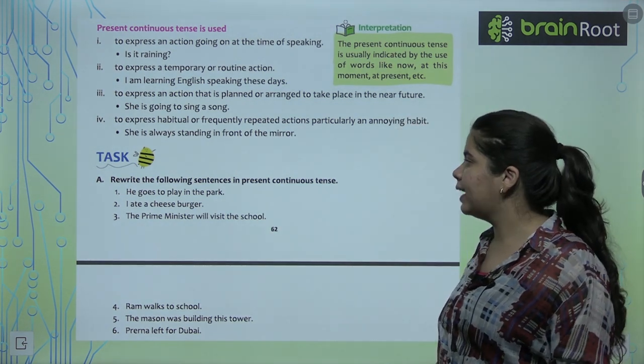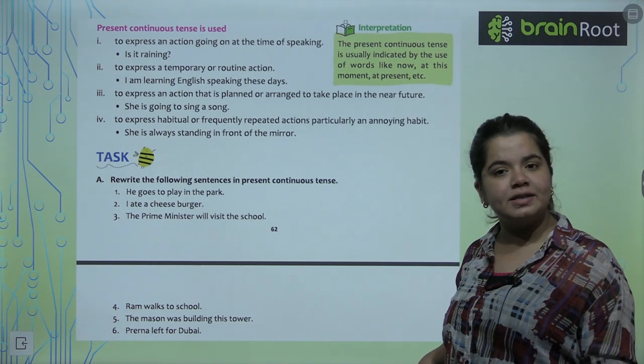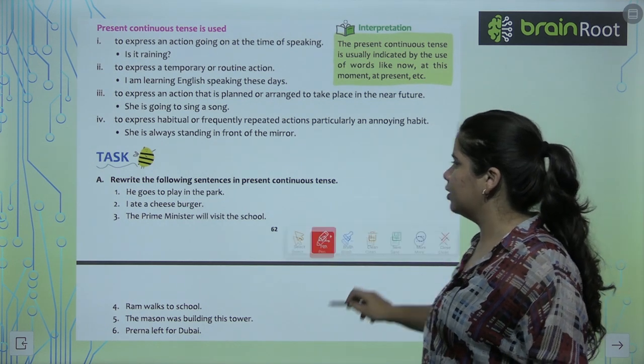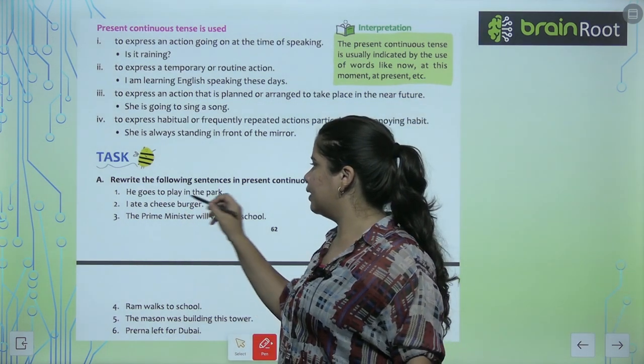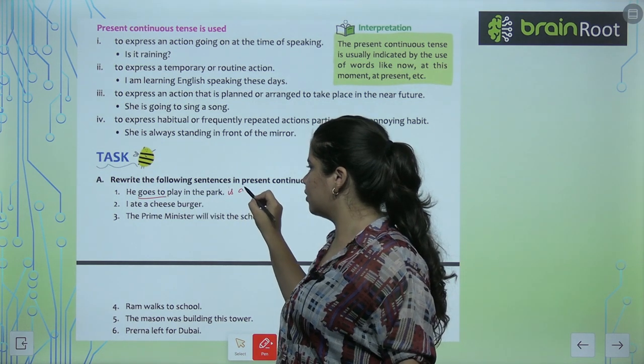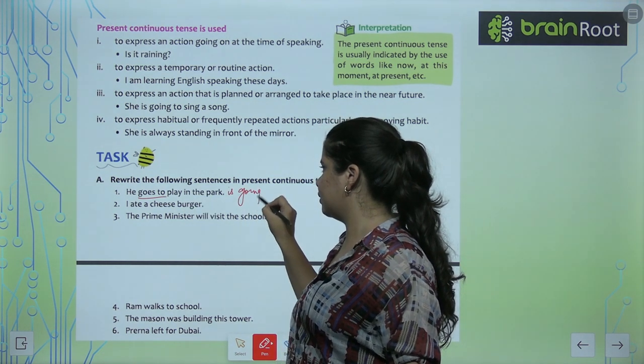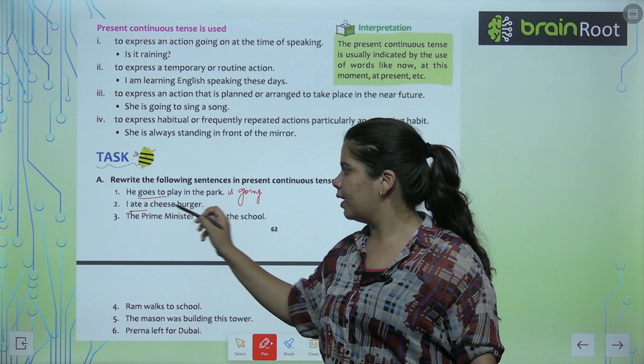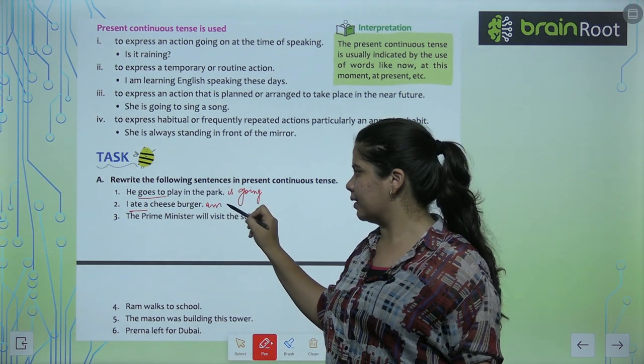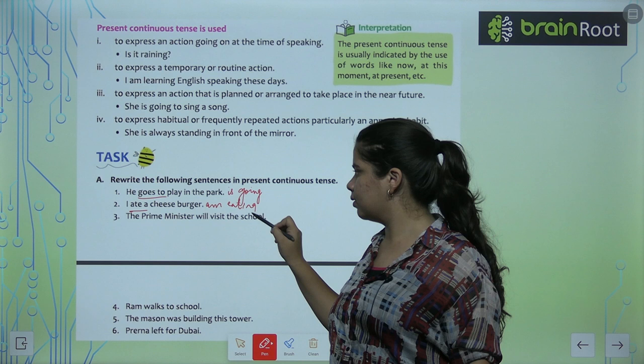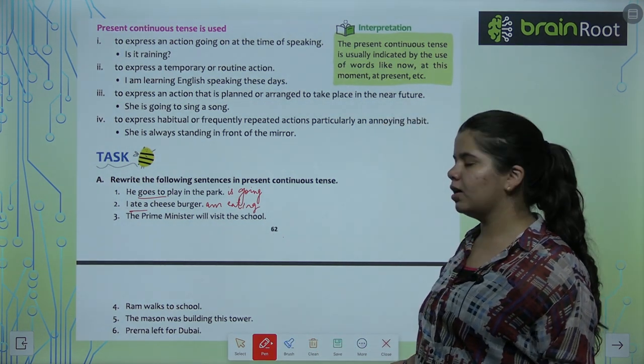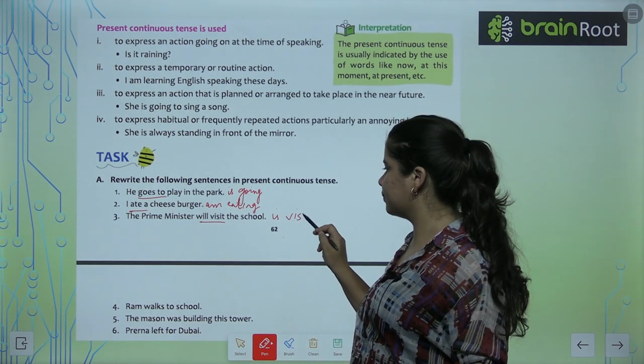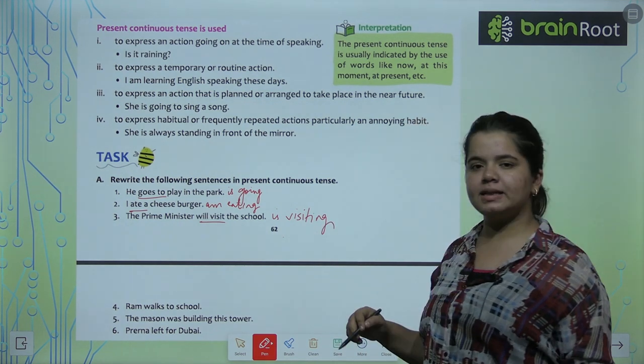First, we have task A in which we have to rewrite the following sentences in present continuous tense. Let's look at the first sentence. He goes to play in the park. So how can you read it? He is going to play in the park. He is going. I ate a cheeseburger. I am eating. The Prime Minister will visit the school. The Prime Minister is visiting the school. Hope it's clear.